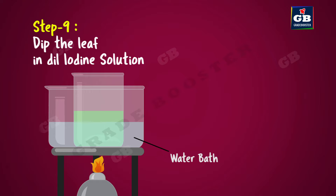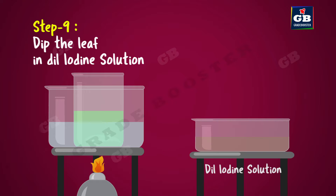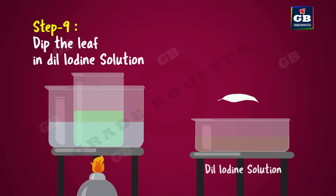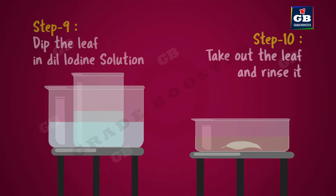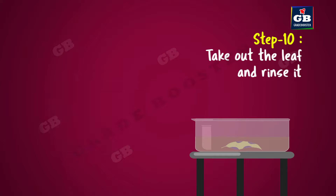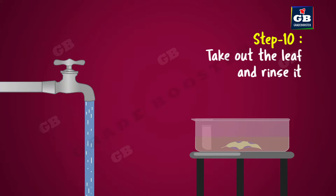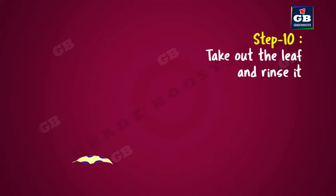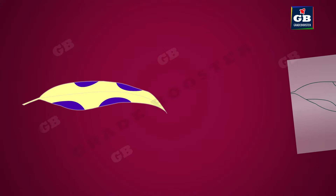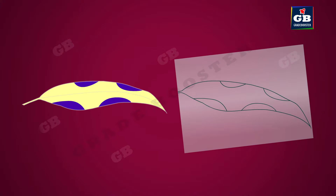Take the leaf out and dip it in a dilute iodine solution for a few minutes. Take out the leaf and rinse it. Observe the blue-colored part of the leaf and compare it with the paper tracing.